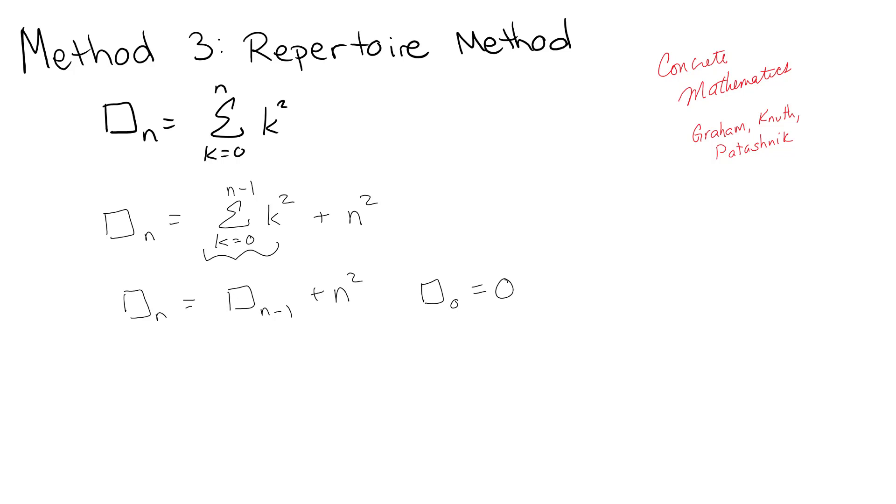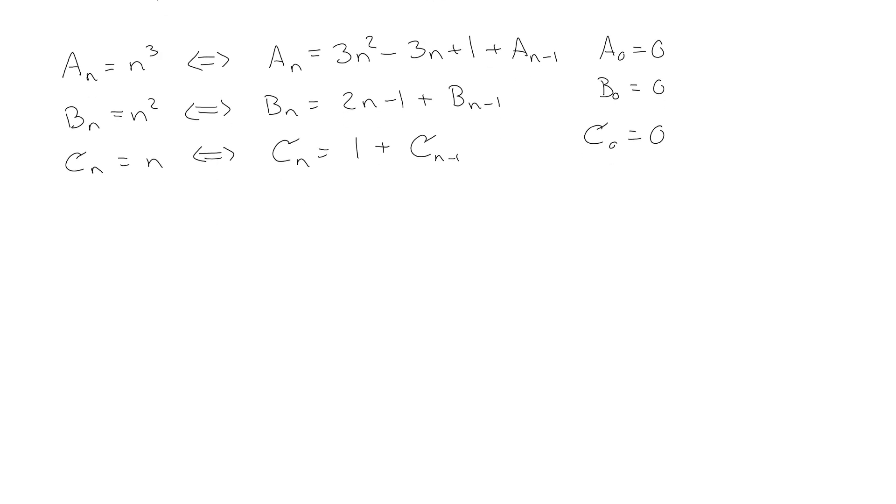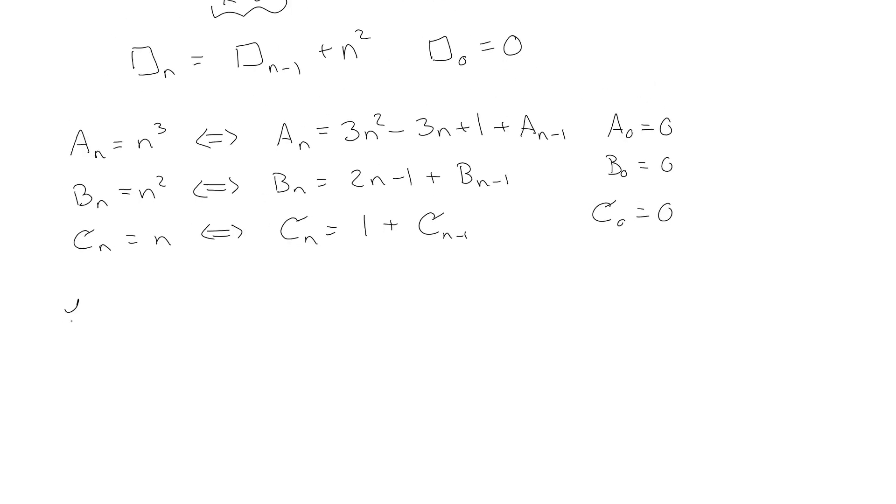In other videos we've already established a repertoire, and these are things that we've already established we know that they work. Now we just need to apply them to our current problem. We're going to let box of n equals alpha A sub n, beta B sub n, and gamma C sub n. If you didn't watch the videos on repertoire you'll be totally lost, so you should go check that out.